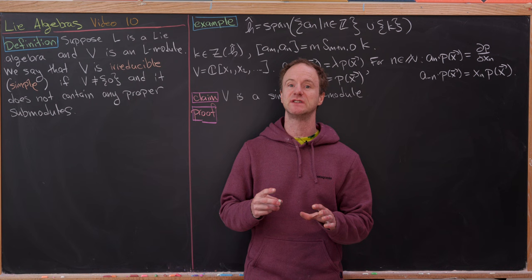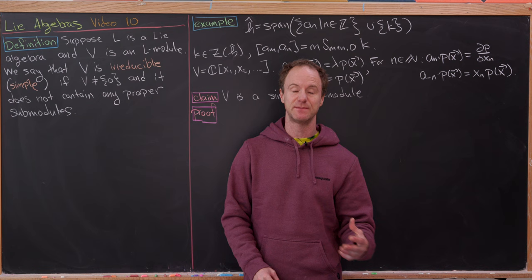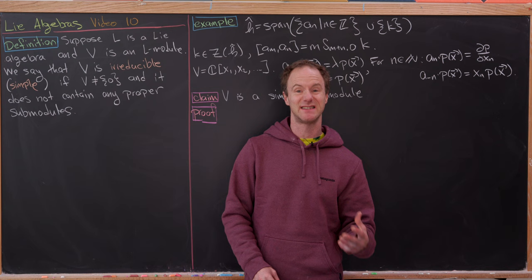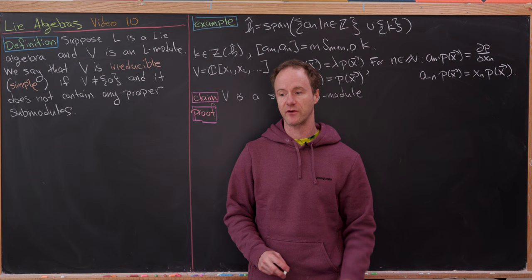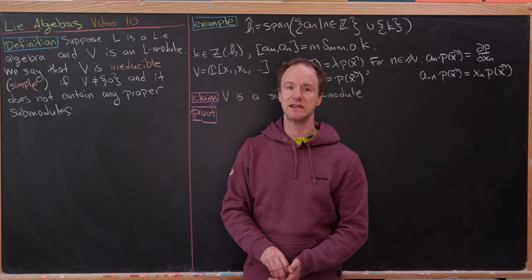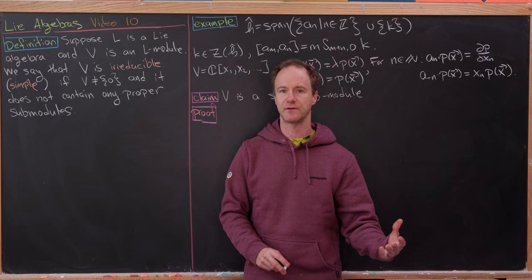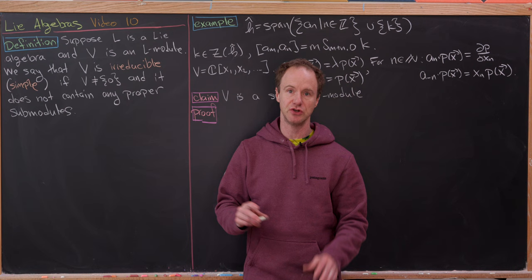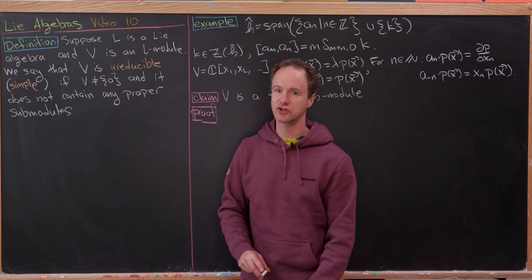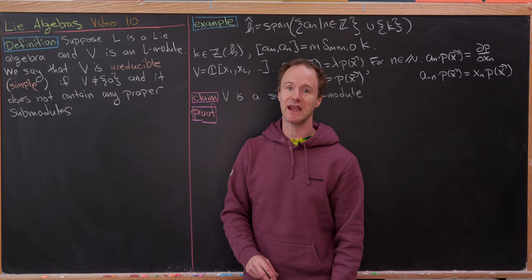Today we're going to talk about a special type of representation or module, a so-called simple module, which is one that cannot be reduced any further. Let's look at the proper definition. Suppose L is a Lie Algebra and V is an L-module. Then V is called irreducible — also called an irreducible representation or a simple module — if V is non-trivial, meaning it is not the zero vector space, and it does not contain any proper submodules.